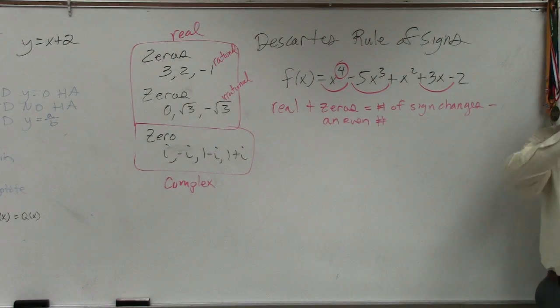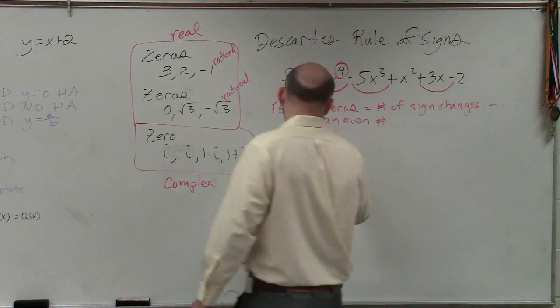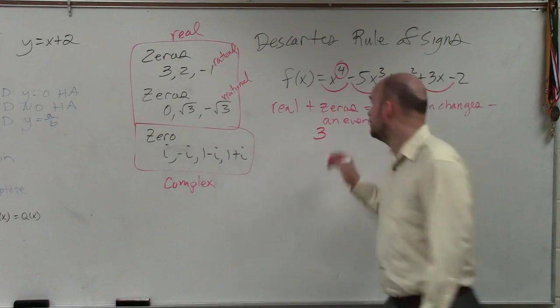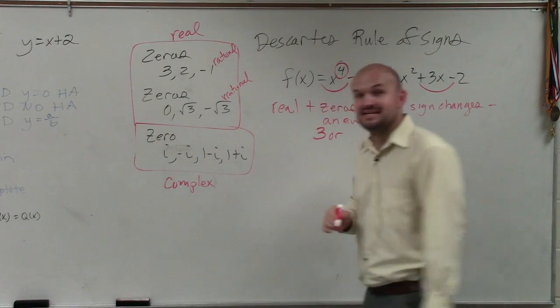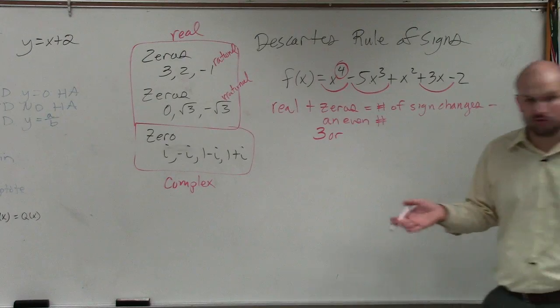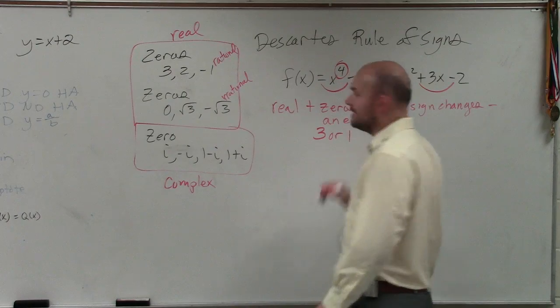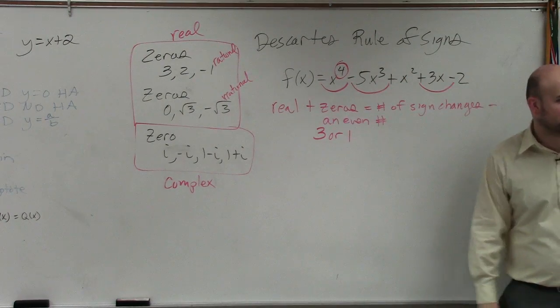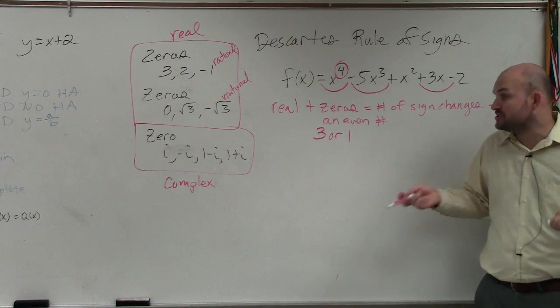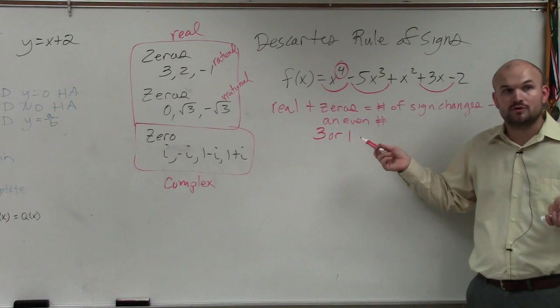Correct? So I have three real zeros or minus an even number, which an even number is two. I have two. I'm sorry, one. I can't subtract any other even. I can't subtract two from one again. So I have the option of three or one.